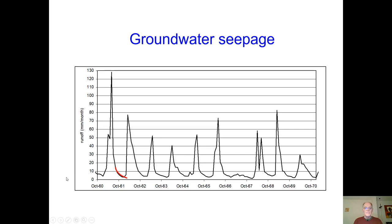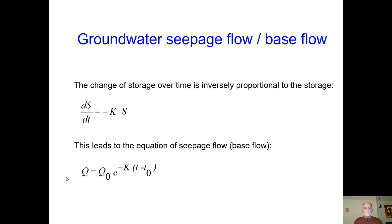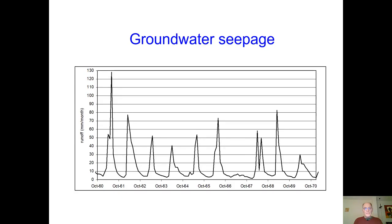But what is interesting is the shape of the depletion curve of this river. Look. It has more or less the shape of this. And they look alike. And this shape is related to actually this function. So the baseflow depletion rate in a river during the dry season seems to follow a very nice exponential function.